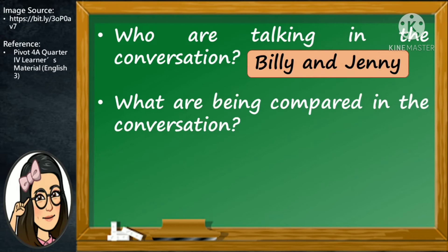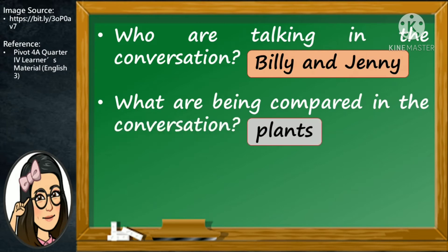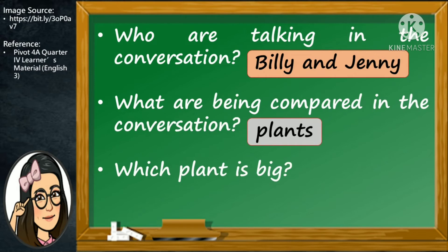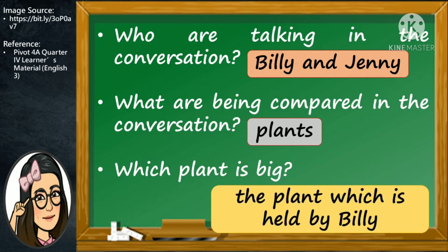Second question: What are being compared in the conversation? Good job! Plants are being compared in the conversation. Third question: Which plant is big? Very good! The big plant is the plant which is held by Billy.